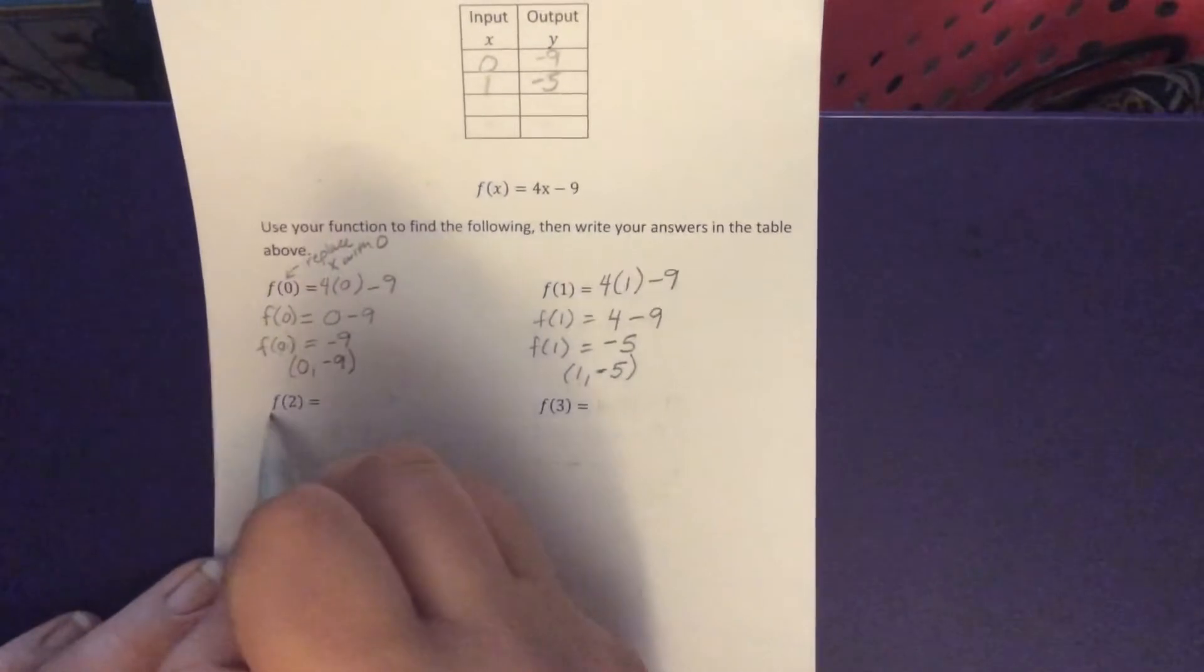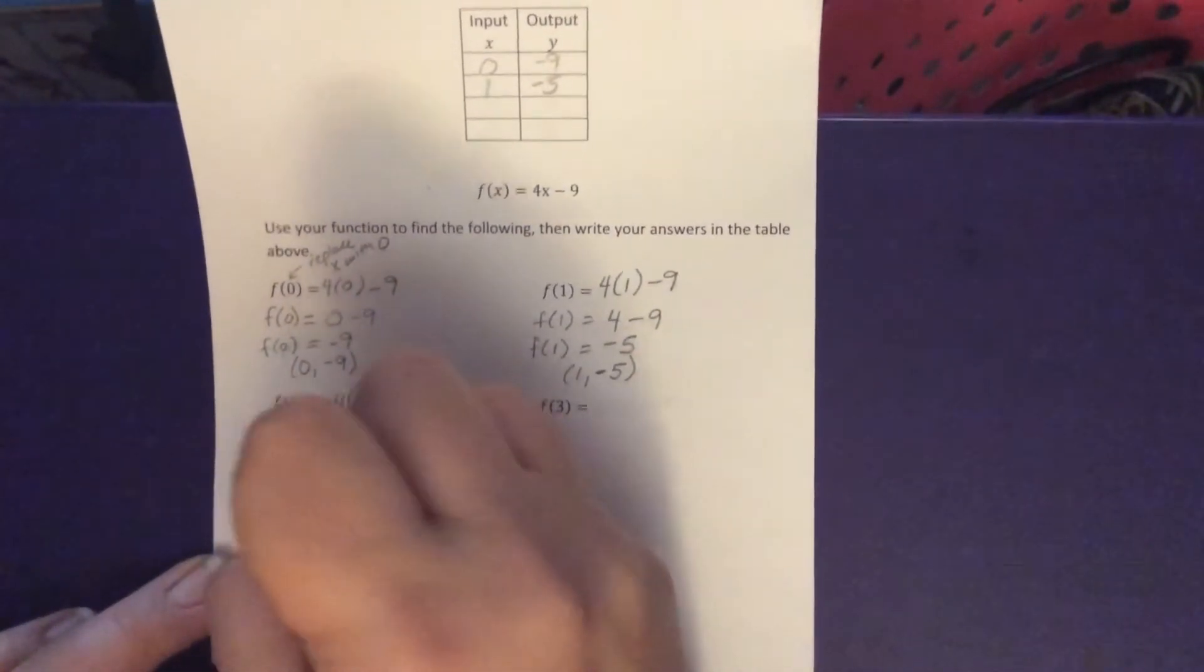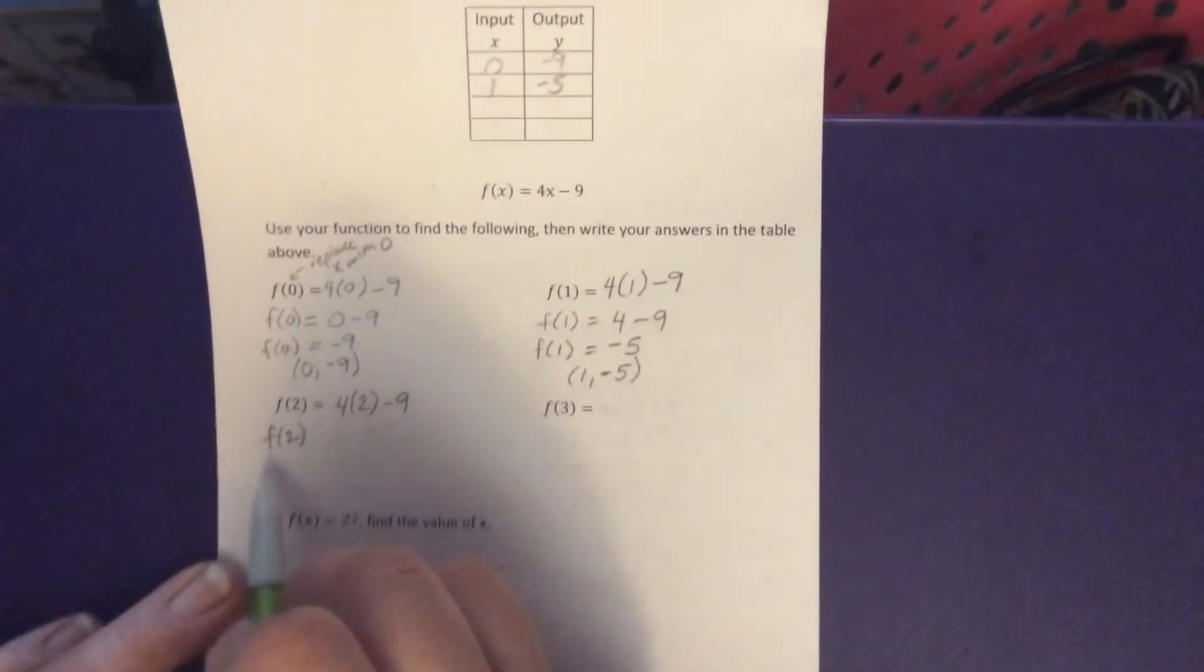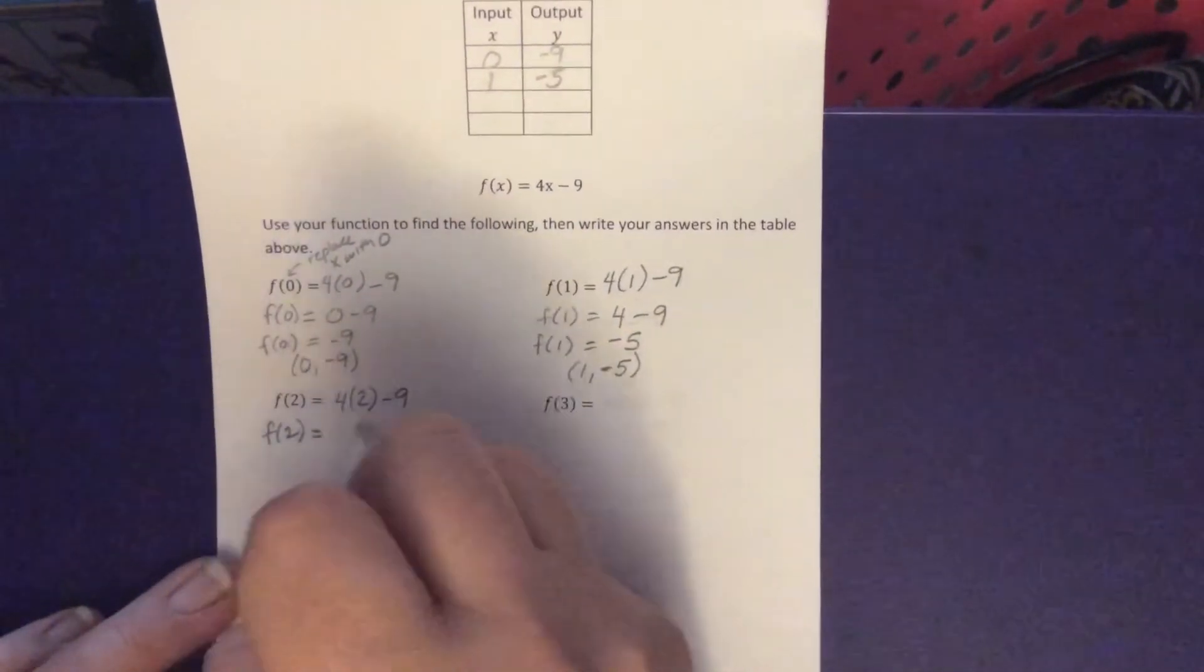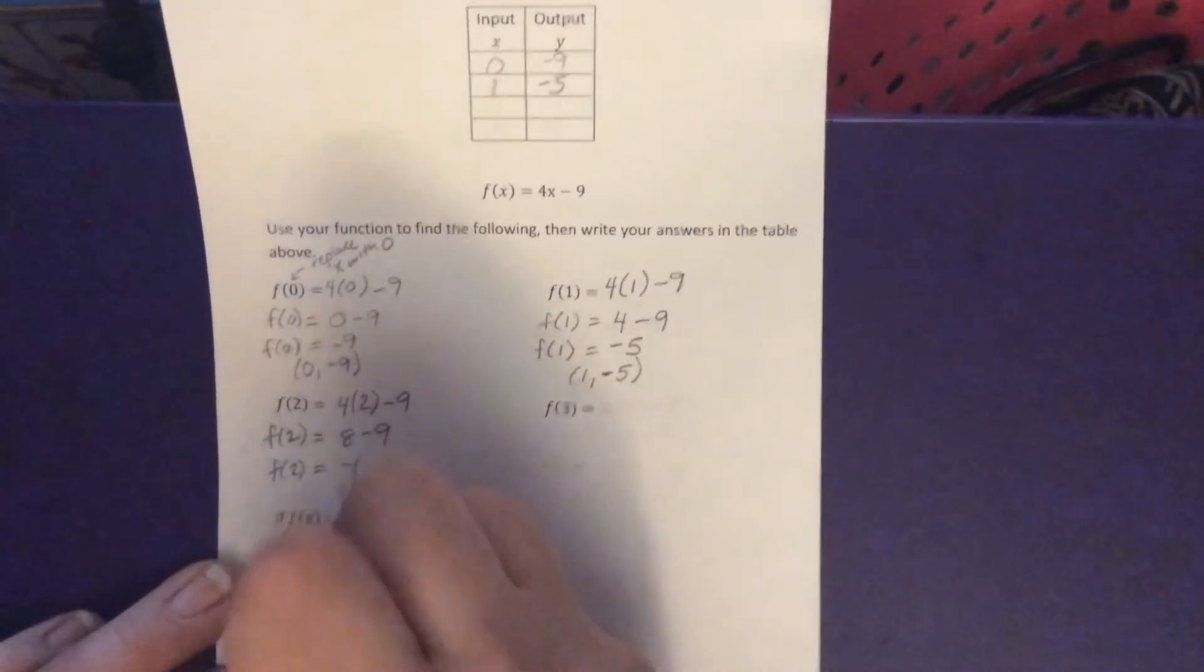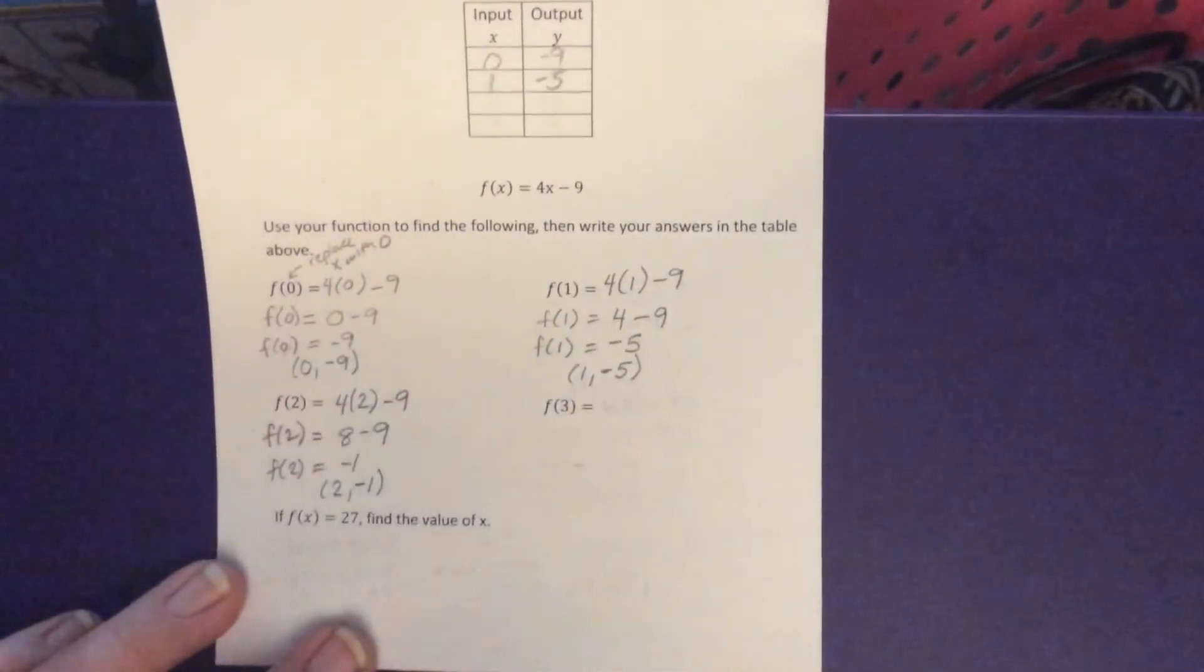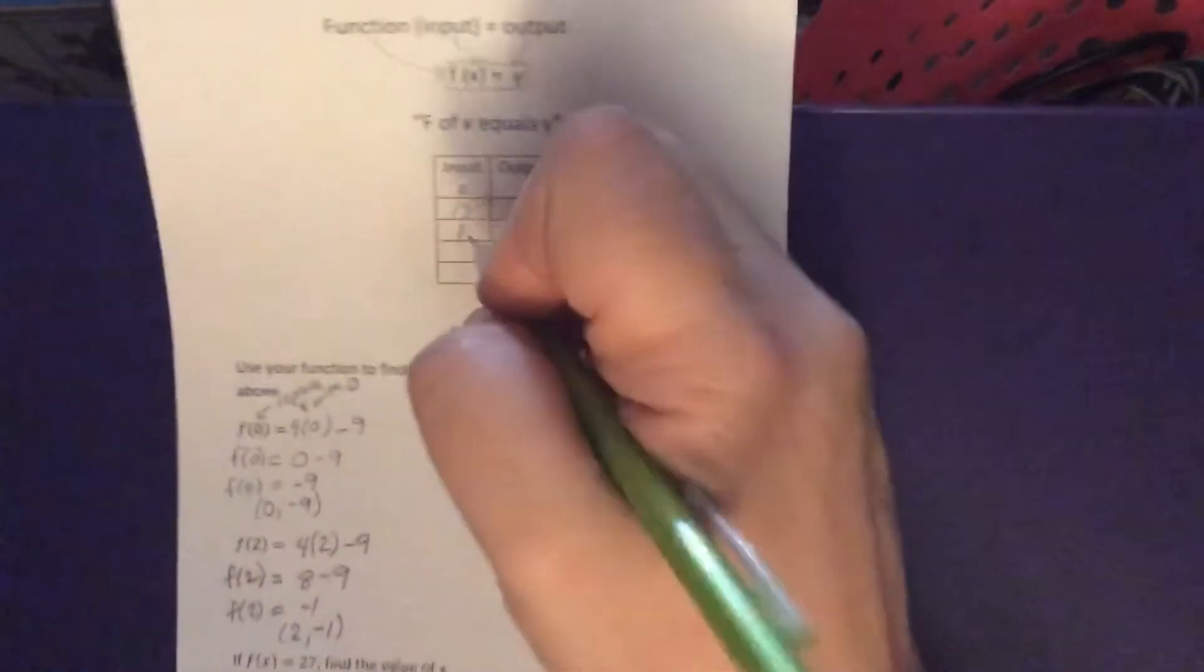I've got two more to do that are just like the same ones we just did. We have f of 2. So we're going to fill in 4 parentheses 2 minus 9. Bring down my notation because that's going to be part of my criteria in C grade showing how to use this function notation and carry it along with me each time. 4 times 2 is 8. 8 minus 9 is negative 1. So f of 2 is negative 1 which means when a 2 goes in, that's my input and negative 1 comes out. That is my output. So I can write my ordered pair 2 comma negative 1 and fill in my table.